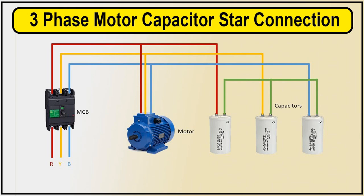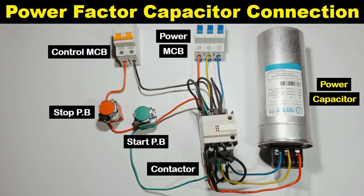Many regulatory standards and guidelines impose limits on harmonic distortion levels in electrical systems. Detuned capacitors help ensure compliance with these standards by reducing harmonic distortion to acceptable levels. Overall, detuned capacitors play a crucial role in improving power quality, protecting equipment, and ensuring regulatory compliance in electrical systems affected by harmonic distortion. Their selective filtering capabilities make them an essential component in mitigating the adverse effects of harmonics and maintaining efficient and reliable operation of electrical systems.